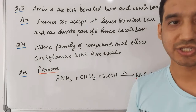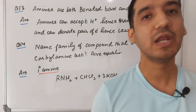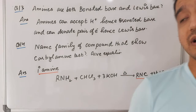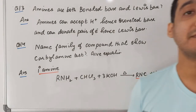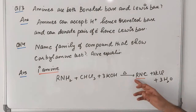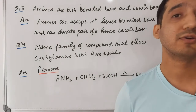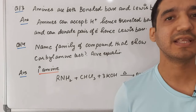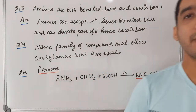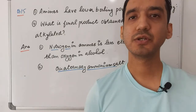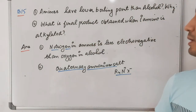Question fourteen: name the family of compounds that give the carbylamine test, and give the equation. The carbylamine test is given only by primary amines. In this test, RNH₂ reacts with chloroform (CHCl₃) and alcoholic KOH with heat to form RNC, called carbylamine or isocyanide, which produces a foul smell. This is used to detect primary amines.